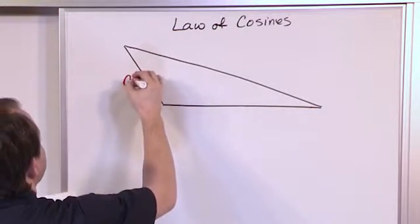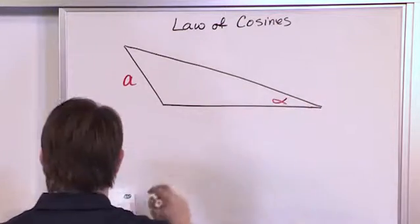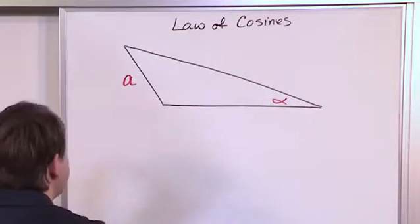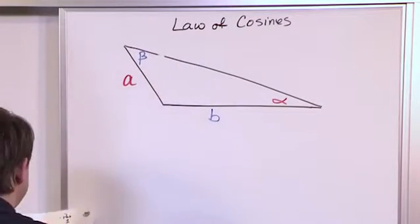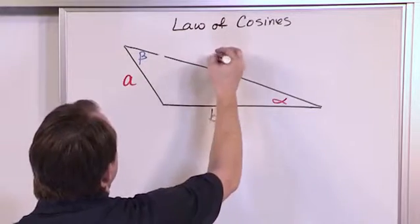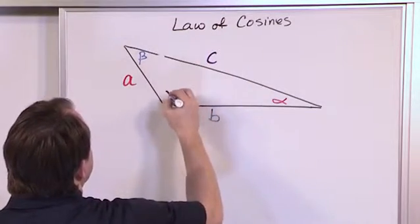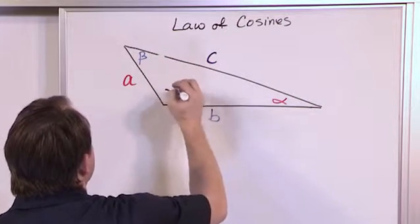What I'm going to do is label this side a and the opposite angle here I'm going to label alpha. And then in a different color I'll label this b and the opposite angle beta just like last time. And then finally we'll have side c with gamma, which is what this guy is supposed to be down here, like that.